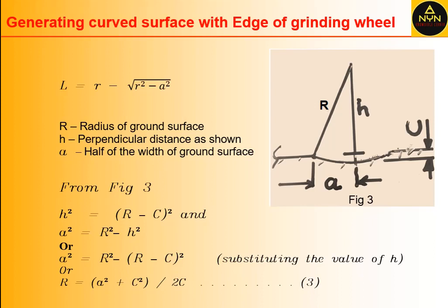In Figure 3, R is the radius of the ground surface, h is the perpendicular distance as shown, and a is half the width of the ground surface. From the geometry, h² = (R - C)² and a² = R² - h².